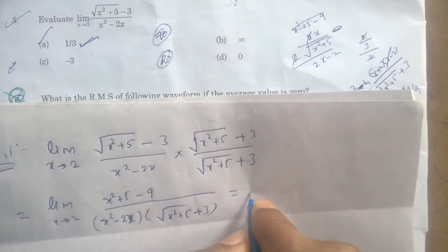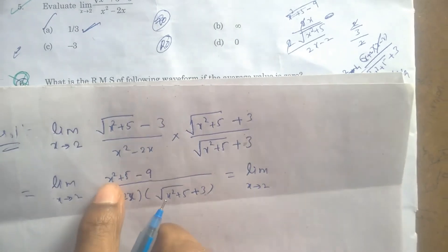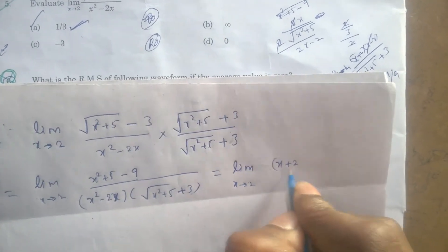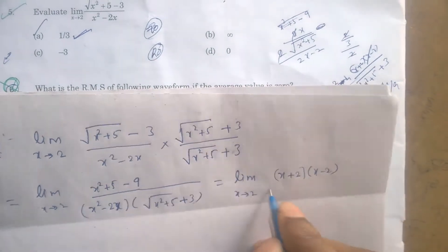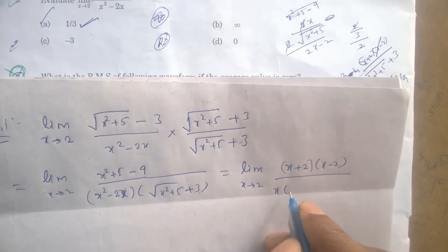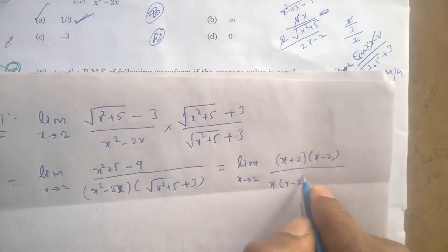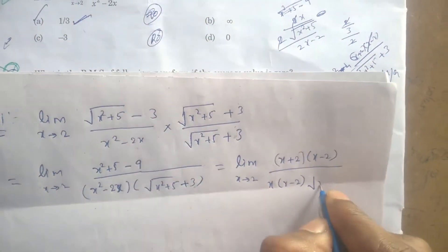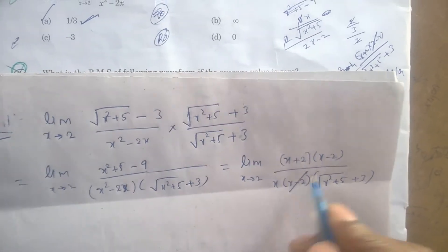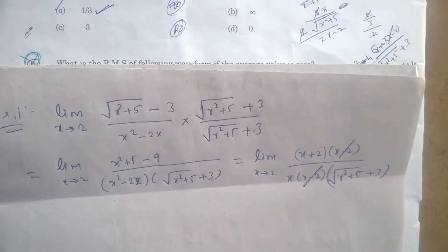Limit x tends to 2: this x²-4 can be split into (x+2)(x-2). Now take x as common: x(x-2) into √(x²+5) + 3. Now x-2 can be cancelled.